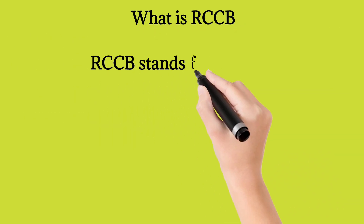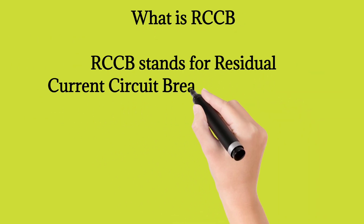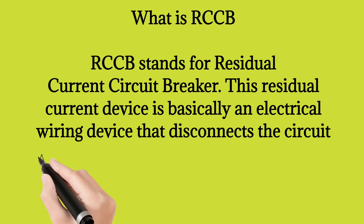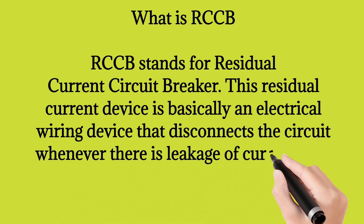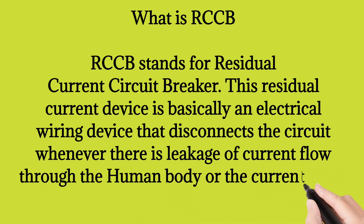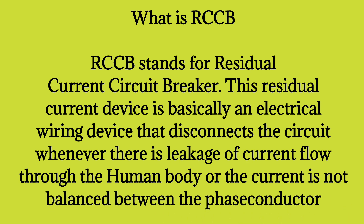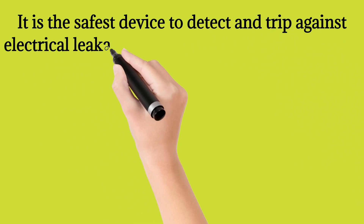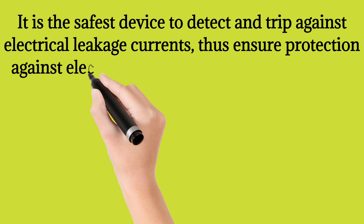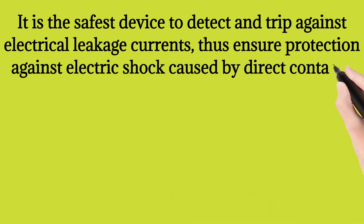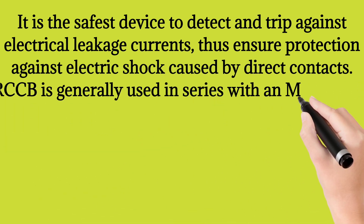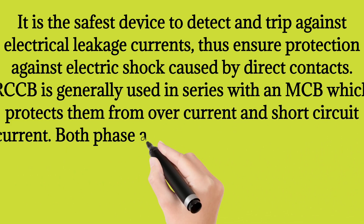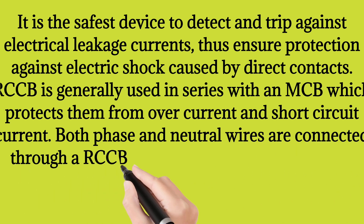What is RCCB? RCCB stands for Residual Current Circuit Breaker. This residual current device is basically an electrical wiring device that disconnects the circuit whenever there is leakage of current through the human body, or when the current is not balanced between the phase conductors. It is the safest device to detect and trip against electrical leakage currents, thus ensuring protection against electric shock caused by direct contacts. RCCB is generally used in series with an MCB which protects against overcurrent and short circuit current. Both phase and neutral wires are connected through an RCCB device.